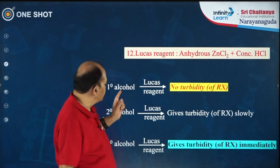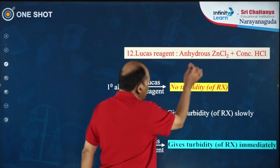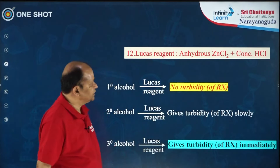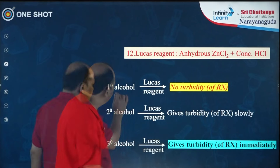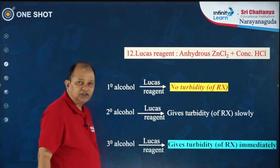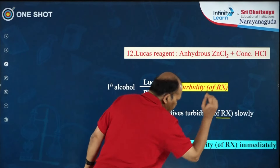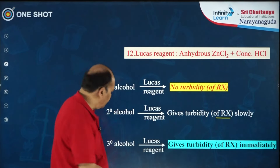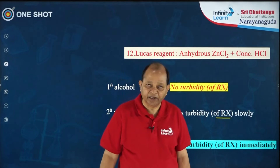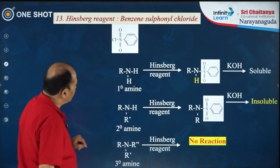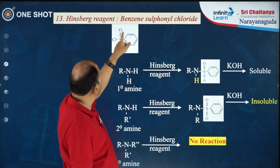Another interesting distinction is between primary, secondary, and tertiary alcohols using Lucas' reagent — anhydrous zinc chloride with concentrated HCl. Primary alcohol does not react with Lucas' reagent; secondary alcohol reacts slowly giving a turbidity of alkyl halide; while tertiary alcohol immediately gives a precipitate of tertiary alkyl halide. Another reagent is the Hinsberg reagent — benzene sulfonyl chloride.